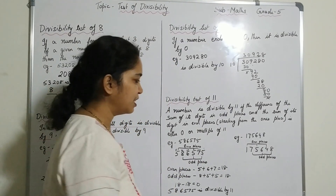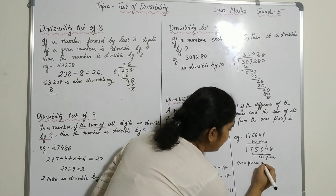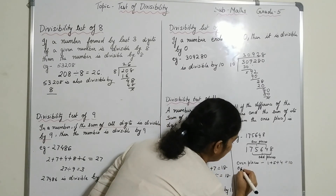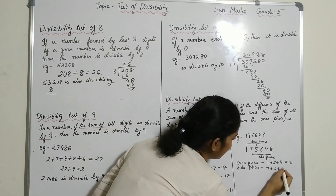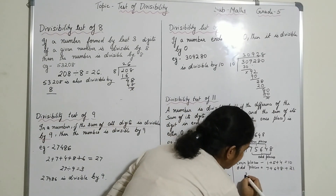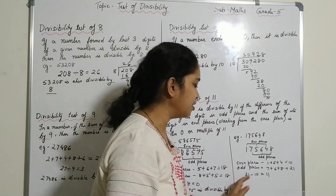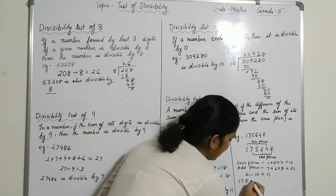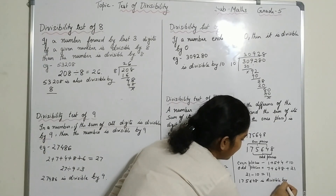Another example: 175648. The even place digits are 1 + 5 + 4 = 10, and the odd place digits are 7 + 6 + 8 = 21. The difference is 21 − 10 = 11. Since the difference is 11, which is a multiple of 11, the number 175648 is divisible by 11.